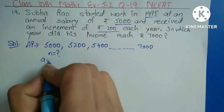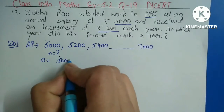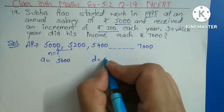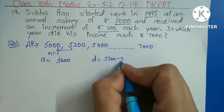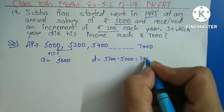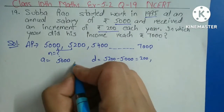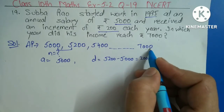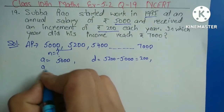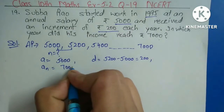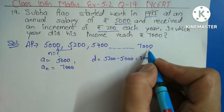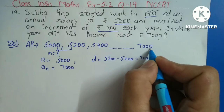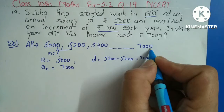Isme A jo hai, first term, that is 5,000. D is equal to common difference, that is A2 minus A1: 5,200 minus 5,000, that is 200. And that term, the last term — isko hum last term assume kar lenge. Aur last term isme kya given hai? 7,000 Rs. Hamein yahi find out karna hai, ki yeh last term hai 7,000 Rs.